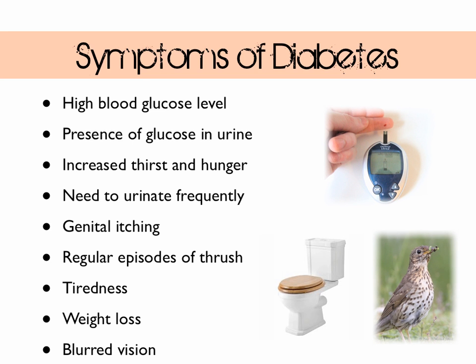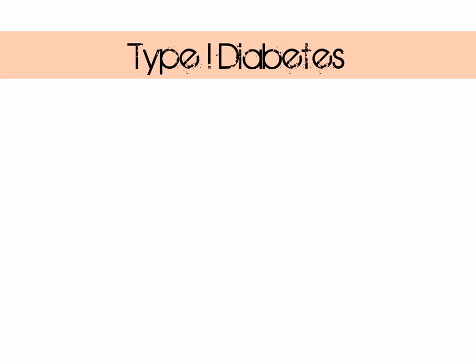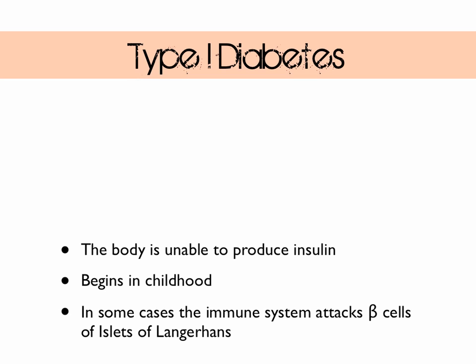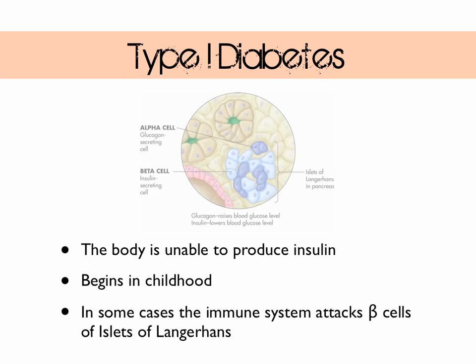People with type 1 diabetes are unable to produce insulin, the hormone that lowers blood glucose levels. This condition often begins in childhood and onset is relatively quick, taking only a matter of weeks. In some cases the cause is autoimmune, where the immune system attacks the beta cells of the islets of Langerhans, so no insulin can be secreted.